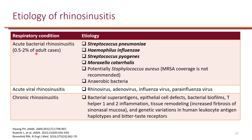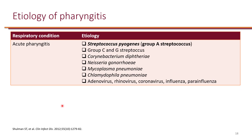If we are to treat acute bacterial rhinosinusitis, these are the four organisms we want to target, so we want agents that work well against these. Potentially, Staphylococcus aureus could cause rhinosinusitis; however, it's rare, and MRSA coverage is not recommended — we do not want to cover empirically for MRSA.